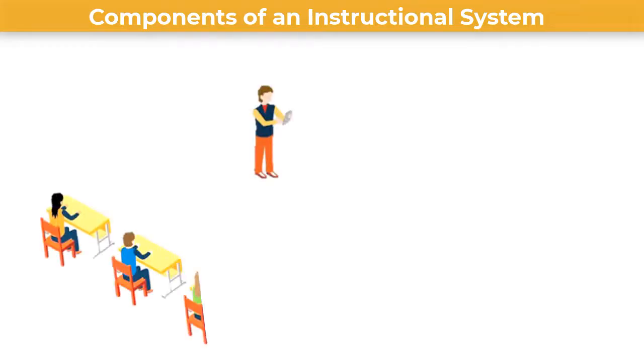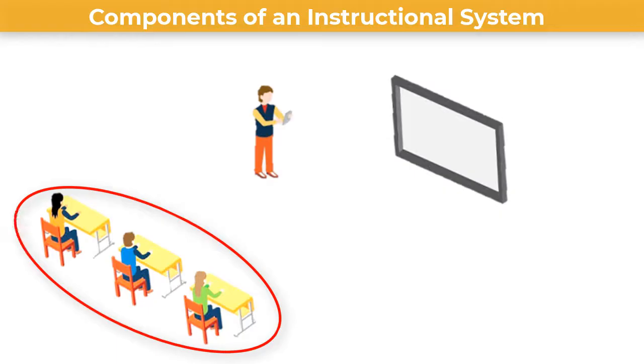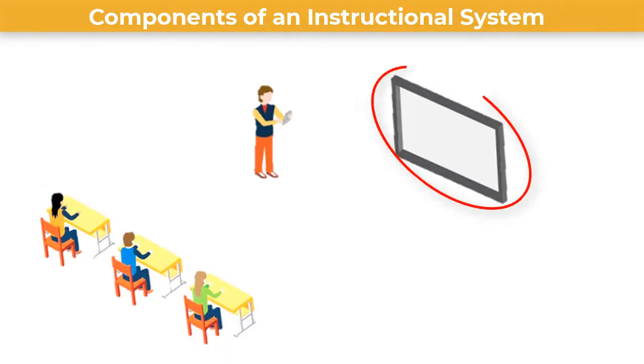Number two, the students. And number three, we have the media. That is to say, in the instructional system there are three major components: number one, the teacher or instructor; the students, those are the learners whatever their level; and we have the media.